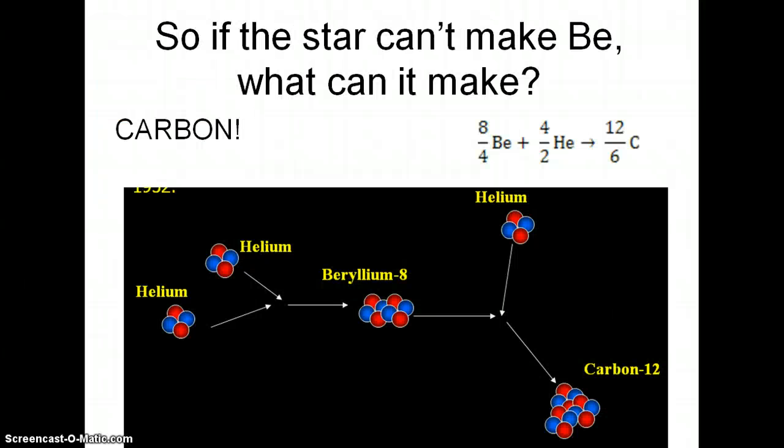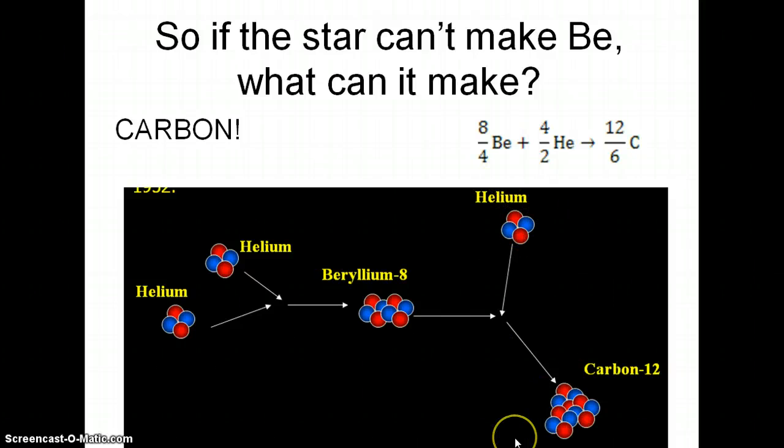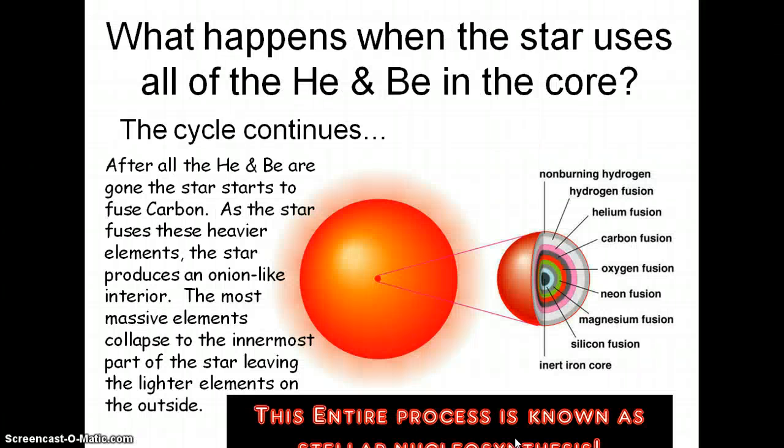Since the star can't make beryllium, it's going to make carbon. It takes two heliums, slams them into a beryllium-8 — which is super unstable — the beryllium-8 is alive for a fraction of a second, and then it slams into another helium to produce carbon-12. Carbon-12, as we know, is super stable.